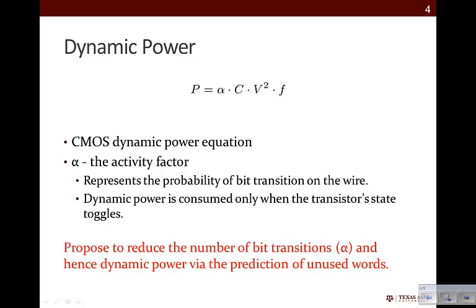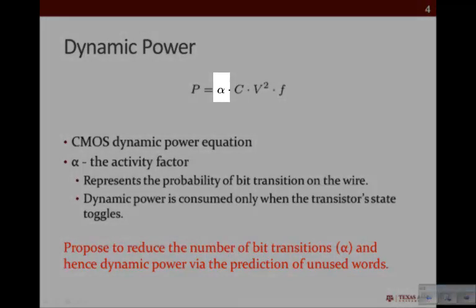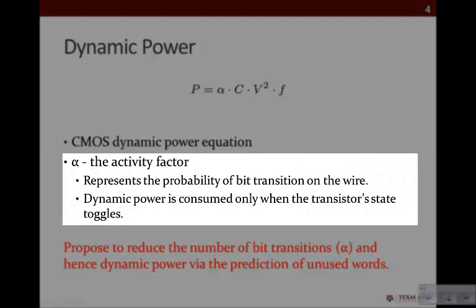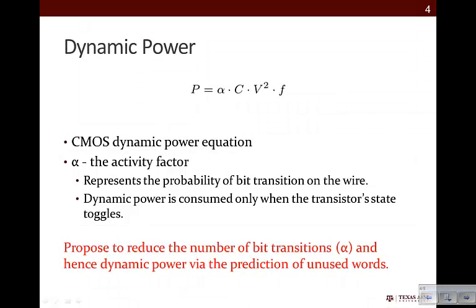As a quick reminder, this is the dynamic power equation for CMOS. The thing I want you to focus on is alpha, or the activity factor. The activity factor defines the probability of a given bit being flipped. In CMOS, dynamic power is only consumed when bit flips occur, and alpha represents the frequency at which that occurs. What we propose to do in this work is reduce the number of bit transitions, and hence alpha, to reduce the overall dynamic power.